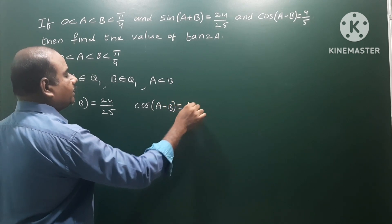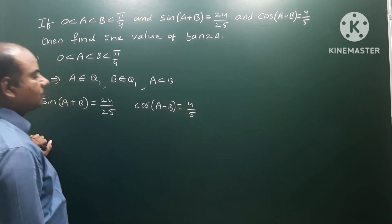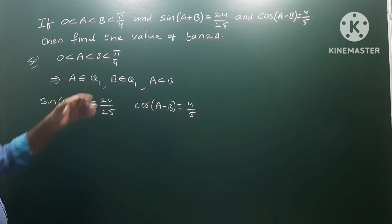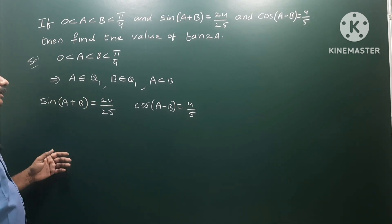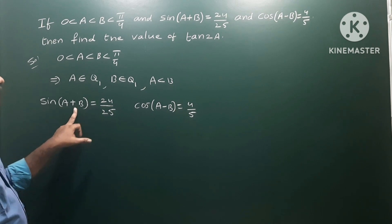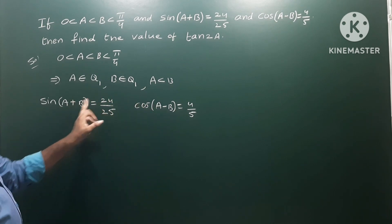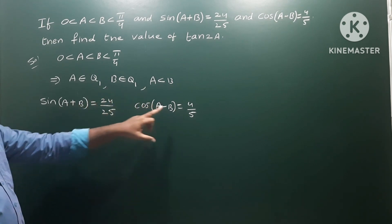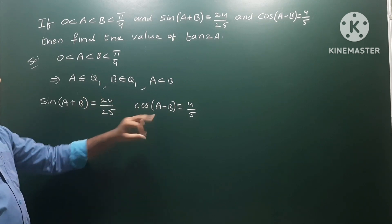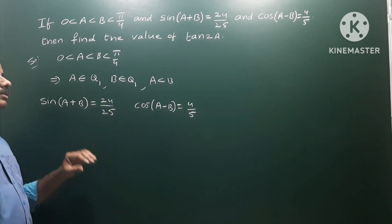So here we will calculate tan 2A. We will calculate (A+B) and (A-B), then add them: A+B plus A-B cancels to give 2A.